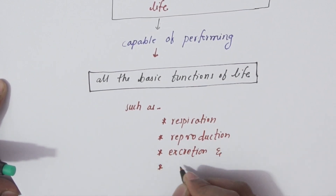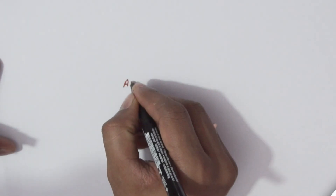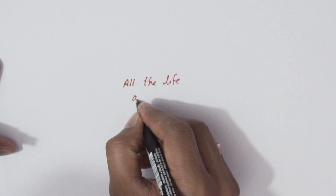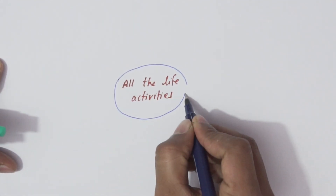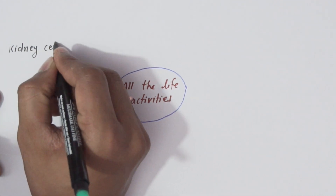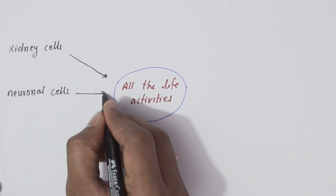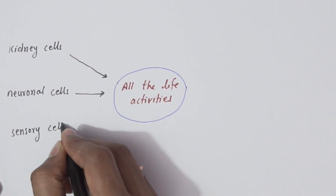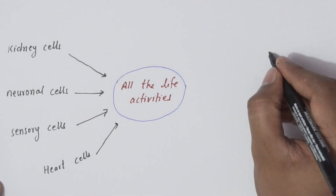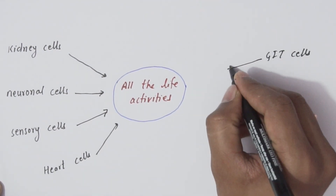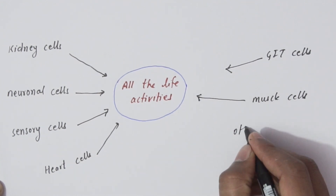Excretion, growth, and many more. All the life activities exhibited by living organisms are the result of the combined action of various cells, such as kidney cells, neuronal cells, sensory cells, heart cells, GI tract cells, muscle cells, and many others.